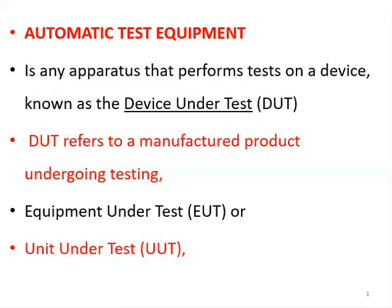Automatic test equipment is simply any apparatus that is used for performing tests on a device under test. What we mean by device under test is any manufactured electronic or electrical component, product, or system that is undergoing testing. The system used for testing in factories is what we call automatic test equipment.